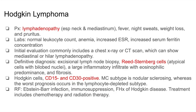Now we have Hodgkin's lymphoma, which has a bimodal distribution — it presents in patients in their 20s or in their 50s and 60s. These patients present with enlarged lymph nodes or lymphadenopathy in the neck and mediastinum. They can also have nonspecific constitutional symptoms such as fever, night sweats, weight loss, and pruritus. Lab results show normal leukocyte counts, anemia, increased ESR, and increased serum ferritin.